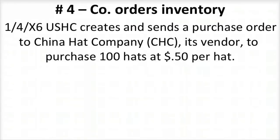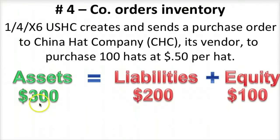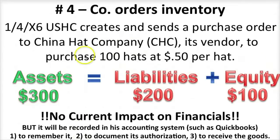On day four, the company orders inventory. On January 4th, X6, USHC creates and sends a purchase order to China Hat Company, its vendor, to purchase 100 hats at $0.50 per hat — $50 of hat purchases. Since this was just an order, there's no current impact on the financials. We don't owe any money for these hats because we haven't purchased them yet. It will be recorded in the accounting system, such as QuickBooks, to remember the purchase, document its authorization, and receive the goods. This is called a purchase order — it's not actually an accounting transaction yet.